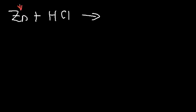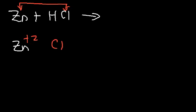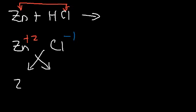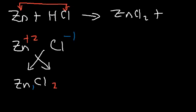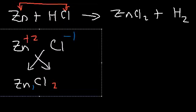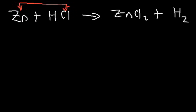Zinc is going to pair up with chlorine. Zinc as an ion typically has a plus two charge and the chloride ion has a minus one charge. Using the criss-cross method it's going to be ZnCl2. Hydrogen is going to be by itself as a pure element; hydrogen is diatomic, so it exists as H2. To balance the reaction, all you need to do is put a 2 in front of HCl.